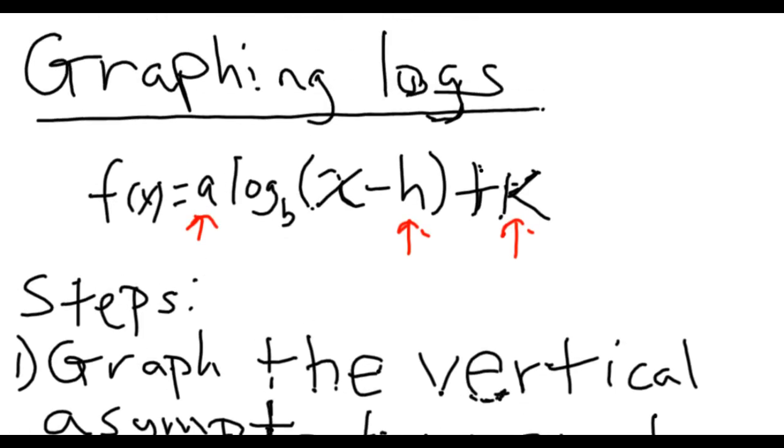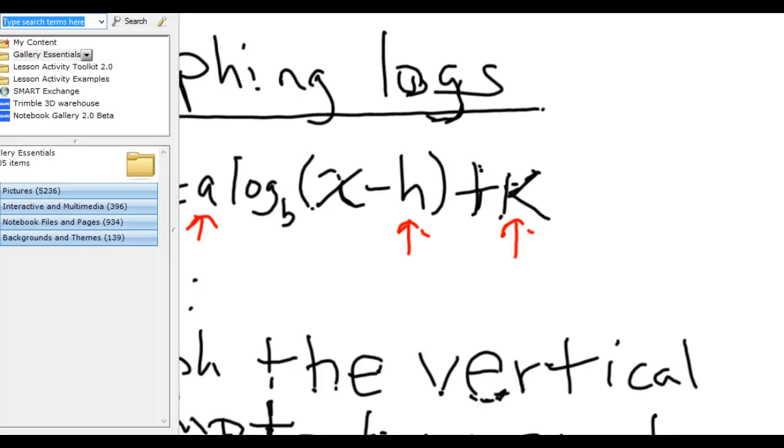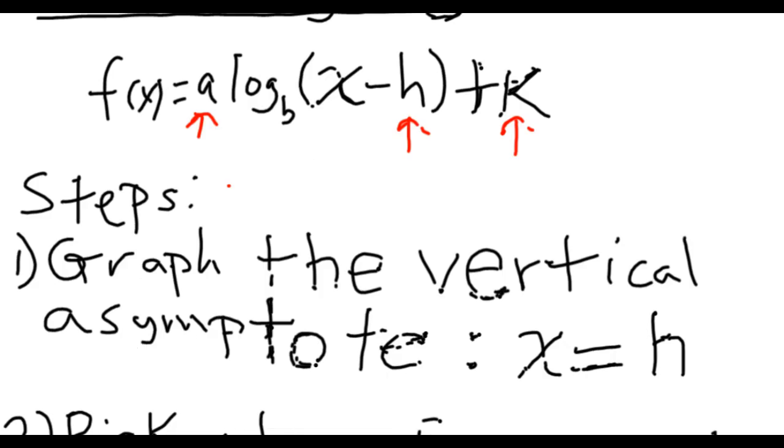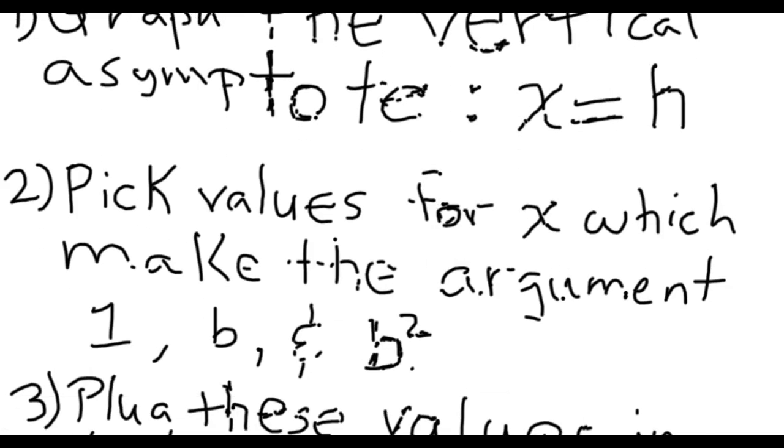Why is there a vertical asymptote? Well, if you look at this H, remember, this argument can never be 0 or negative. If I put an H in for X, H minus H would be 0. That would be the very first amount that would make my log undefined. So this value for X can never be whatever H is, because if it is, if they match, then that would give me a 0 argument. There's always going to be a vertical asymptote for wherever X equals H is.